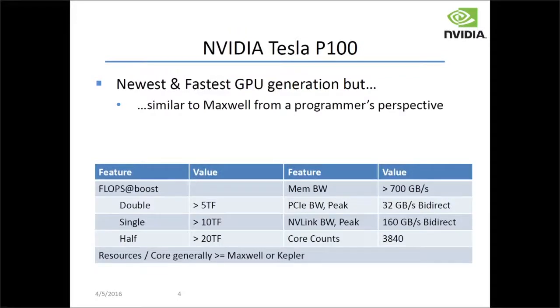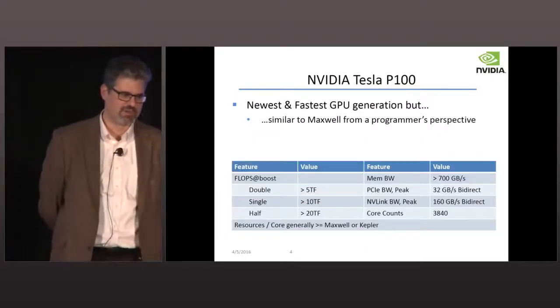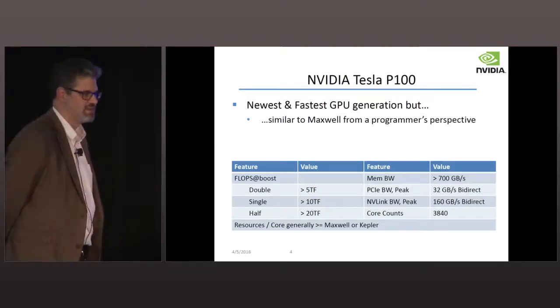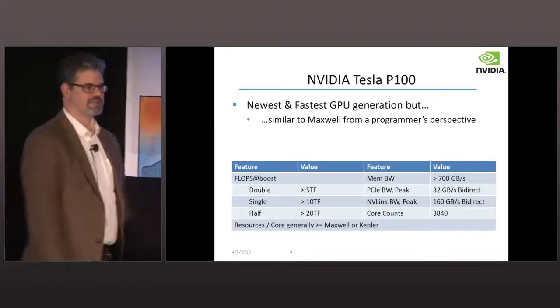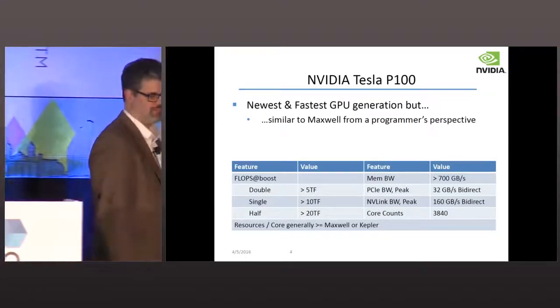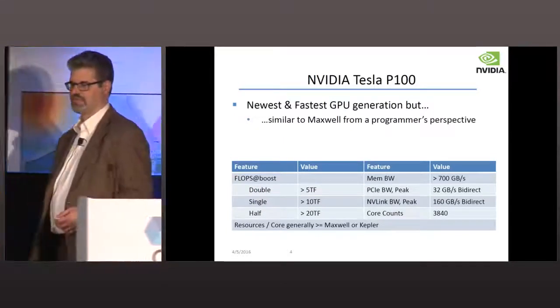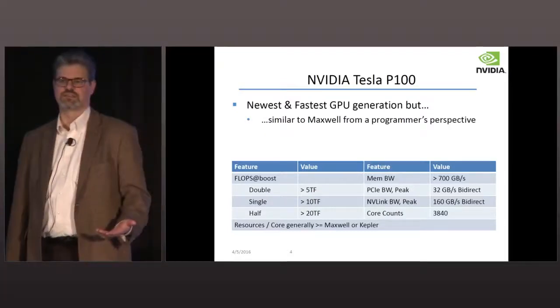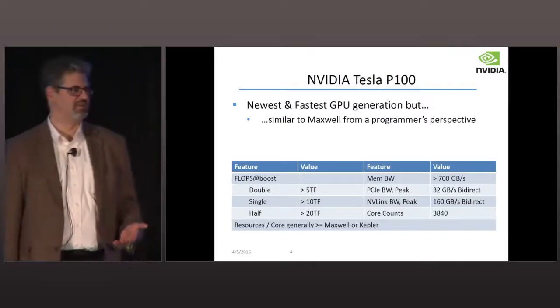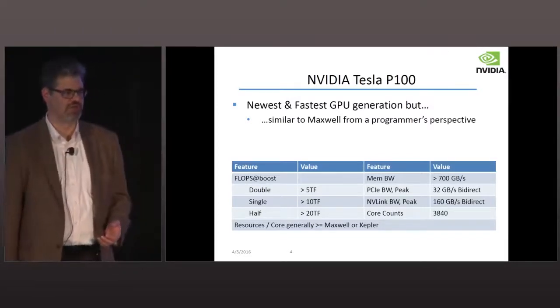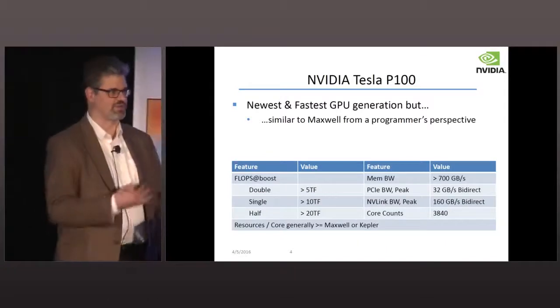The P100 — Jensen did a great job announcing it yesterday, and I'm not going to try to outdo his presentation or his enthusiasm. It's fast — at least twice as fast as our prior generation. Except for the interconnect: the NVLink interconnect is 5x the speed of the PCIe used in our current generation products. That's aggregated per socket — each GPU sees 5x more bandwidth. This is a huge step change.